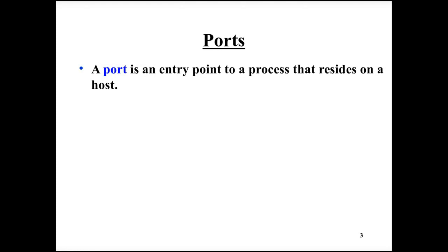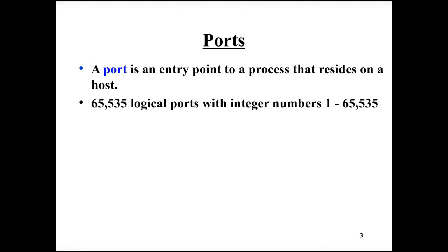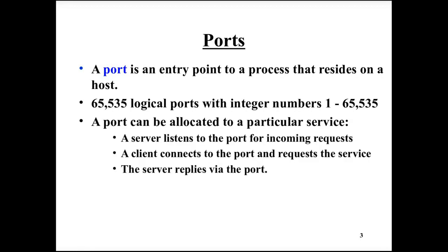A port is an entry point to the process. The socket is identified by an IP address and a port number, among other things. The IP address identifies the machine on which the process is running, and the port identifies the entry point to the process on that machine. The IP protocol specifies that there can be up to 65,535 (16-bit identifier) port numbers on one host. A particular service executing in a process allocates a port, opens a socket on the specific host with that port number, and can listen for incoming requests from clients. The client also opens a socket and sends a connection request to the service, specifying the IP address and port number of the service.